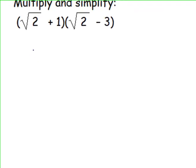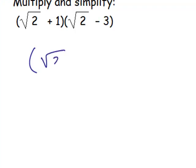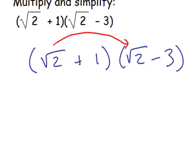This is where we must actually multiply as if these are binomials. We can use the FOIL method if that's helpful to think of. So we can distribute square root of 2 to each term on the second binomial, and then positive 1 will get distributed.